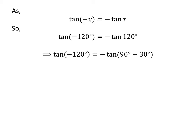As 120 degrees is equal to 90 degrees plus 30 degrees, tangent of minus 120 degrees is equal to minus tangent of 90 degrees plus 30 degrees.